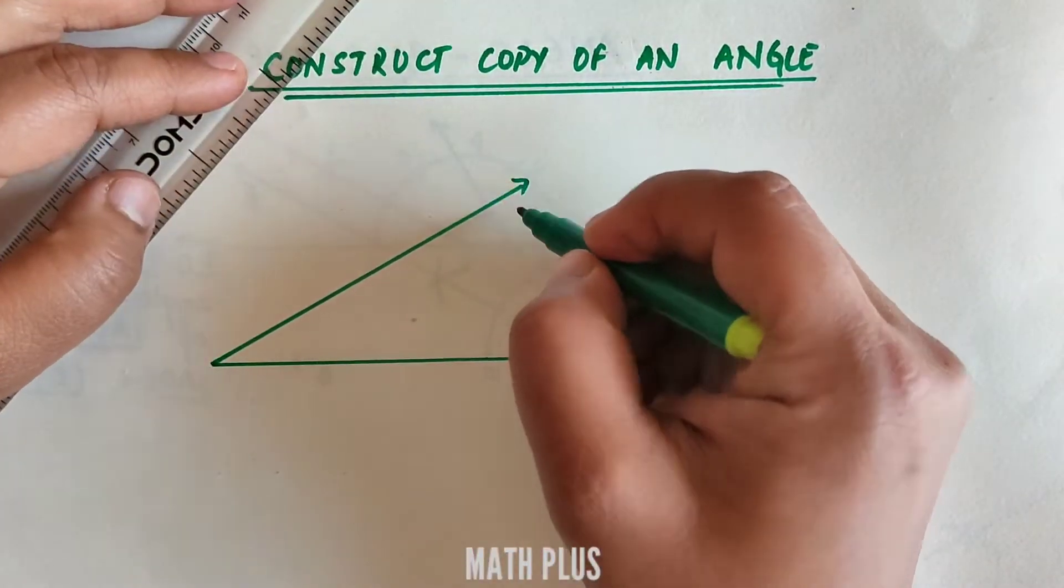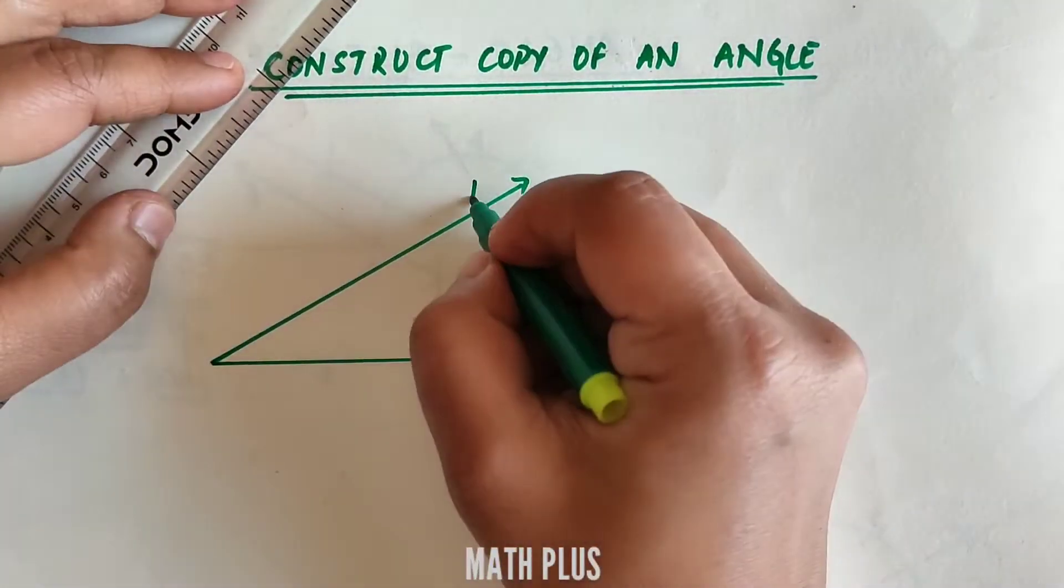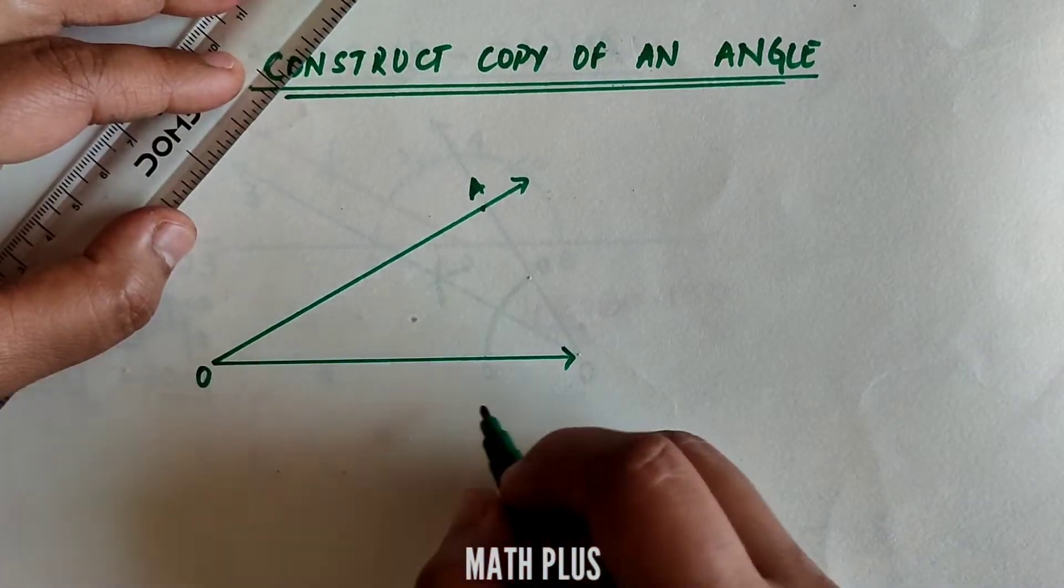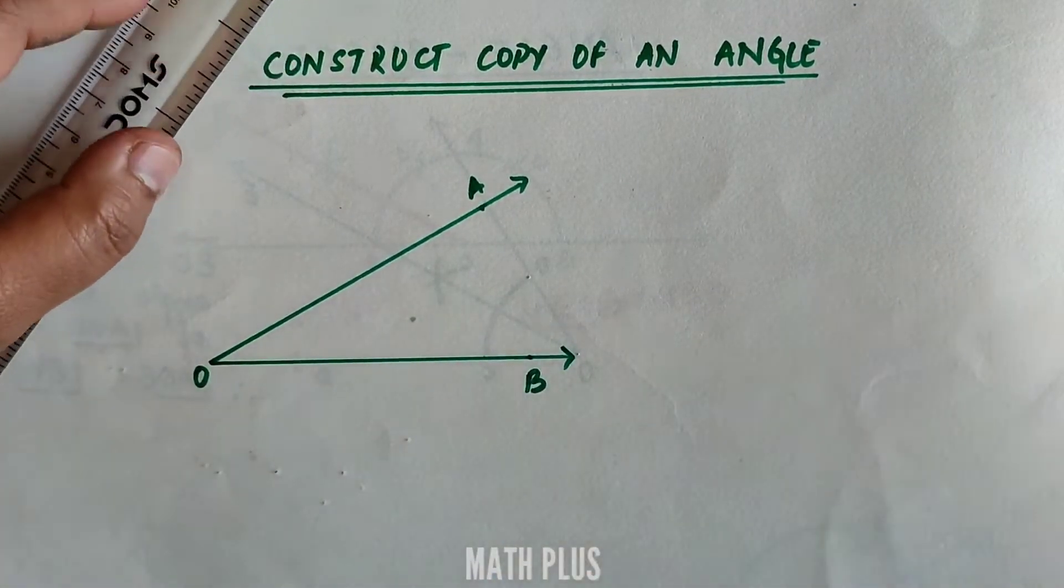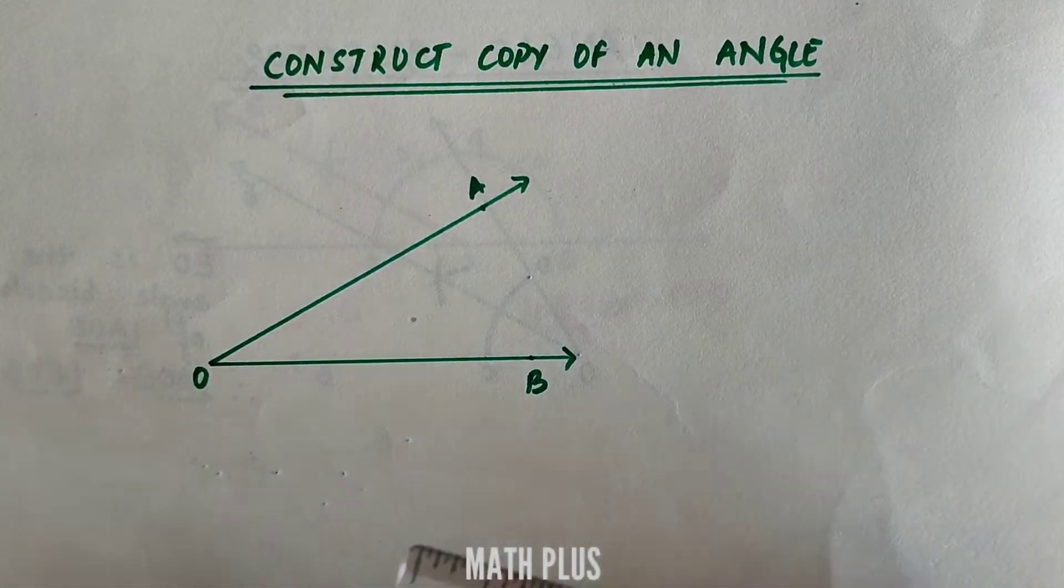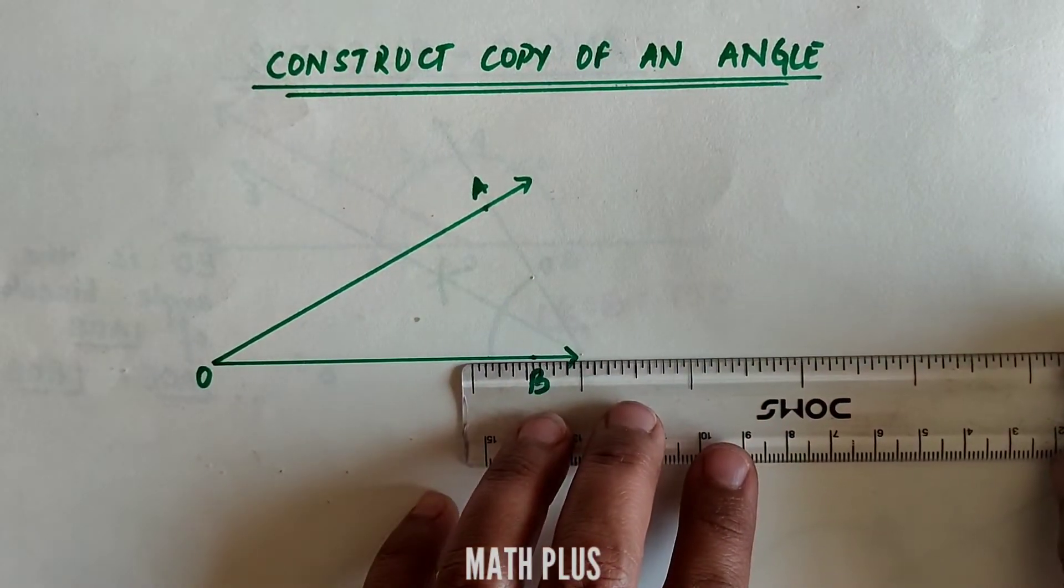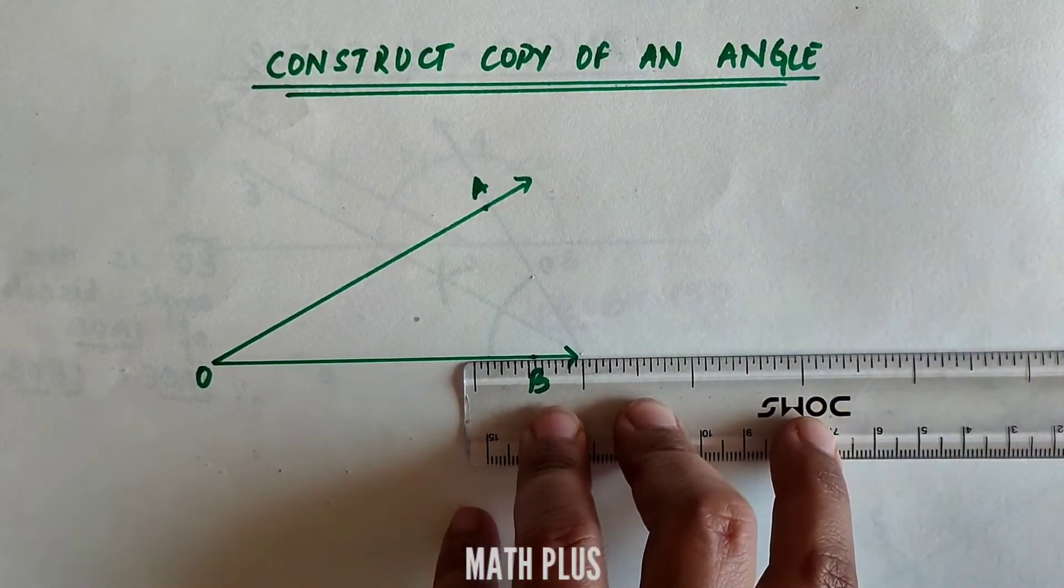Let's take for example here we have an acute angle. We haven't measured the degree or size of that angle, but the name of the angle is given: AOB. We have to construct a copy of the same angle. Copy means to construct an angle of the same measurement.